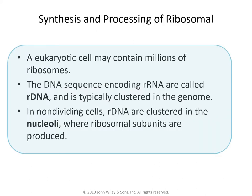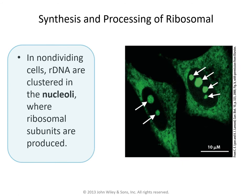There are millions of ribosomes in a eukaryotic cell. Each of these ribosomes consists of ribosomal RNA and ribosomal proteins. The DNA sequences encoding the ribosomal RNA are called rDNA, and typically you will find these clustered in the genome. In order to make a large number of rRNA transcripts, these rDNA sequences are normally repeated hundreds of times. When the cells are not dividing, the rDNA are clustered in the nucleoli where ribosomal subunits are produced.